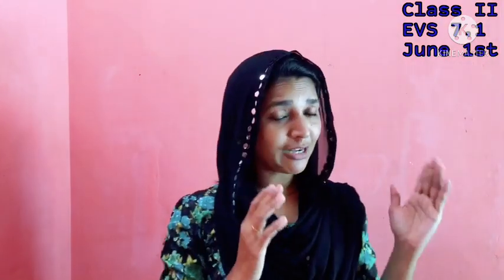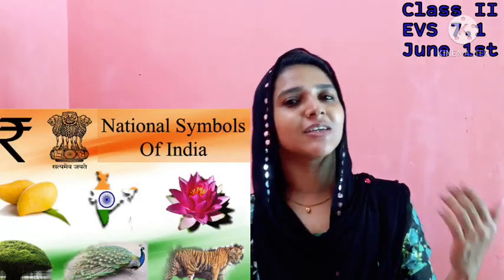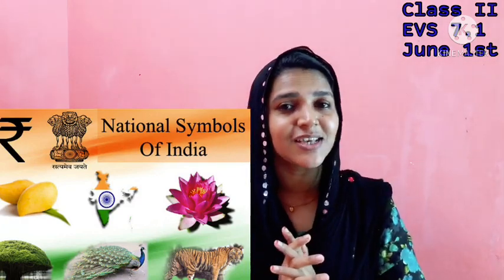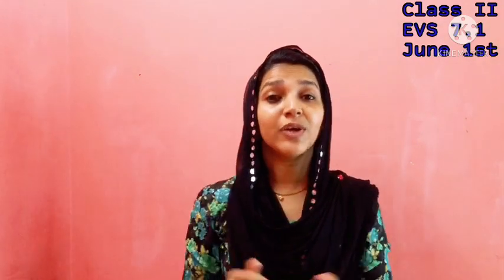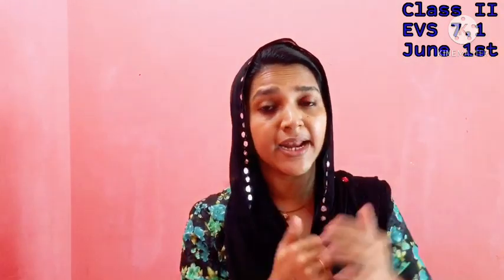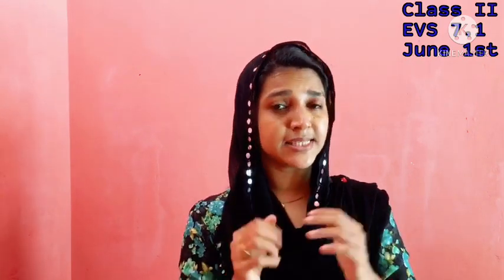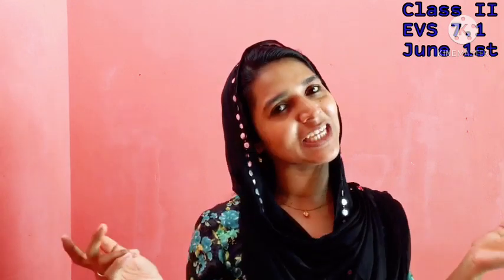You already learned national symbols from your smaller classes. We have our national flag, our national emblem, and tiger is our national animal. Peacock is our national bird. Lotus is our national flower. In today's class, we are going to study about our national symbols in detail. Why do we choose tiger? Why didn't we choose lion as our national animal? Have you ever thought about it? Why is lotus the national flower? Why didn't we choose rose or lily or some other flowers? Let's learn the reasons behind these national symbols.